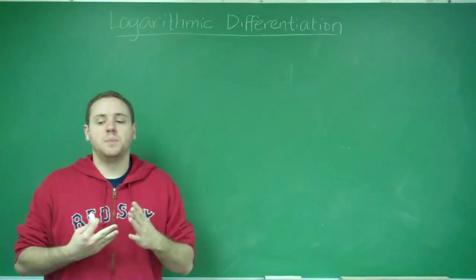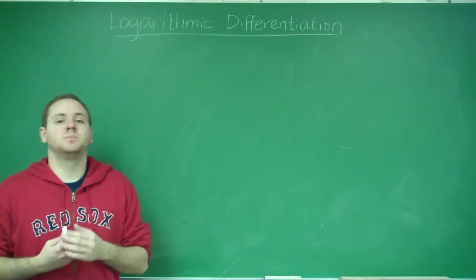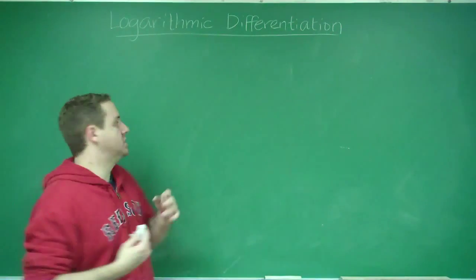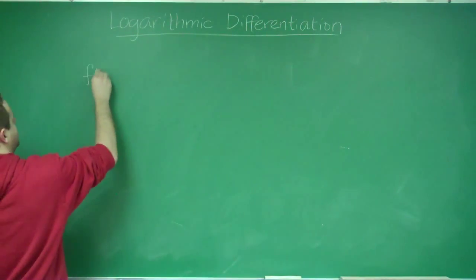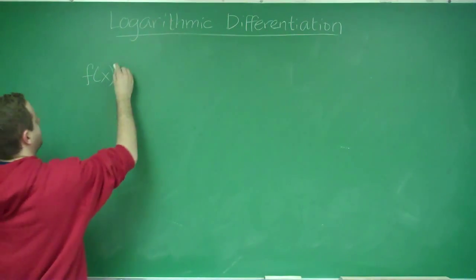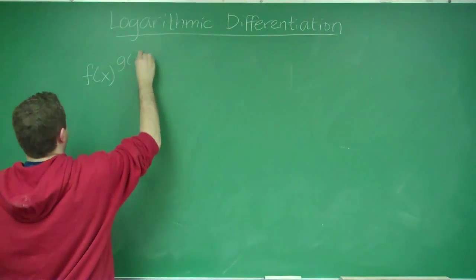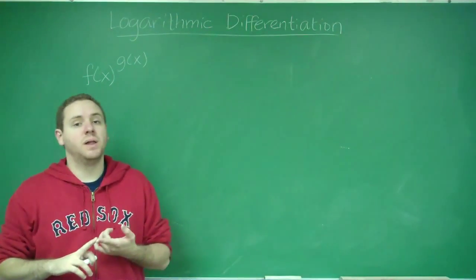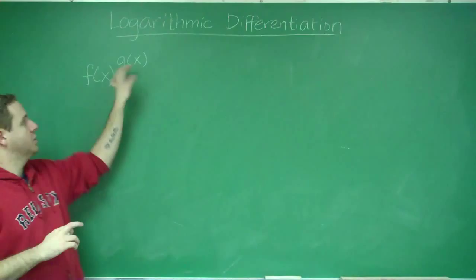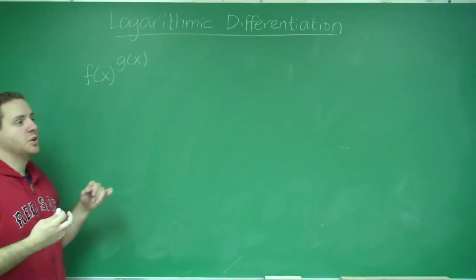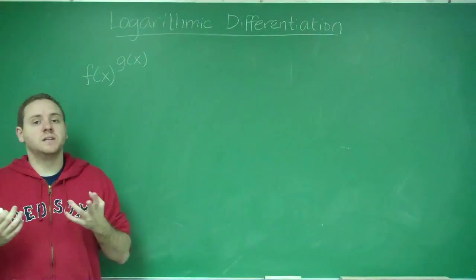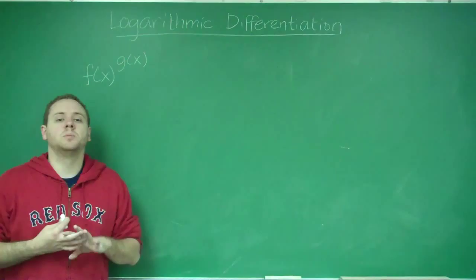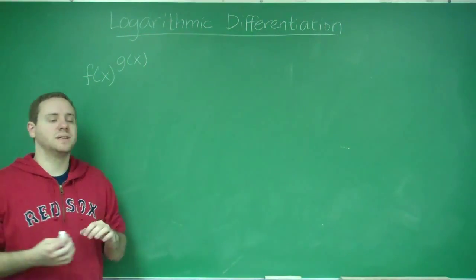One type of problem is if you have an exponential term where both the base and the exponent are functions. So if you have something of the form f(x) to the g(x) power, your power rule does not apply here because your exponent is not constant. Your derivatives of exponentials don't apply because your base is not a constant. So if both of these things are variables, you have to use logarithmic differentiation.